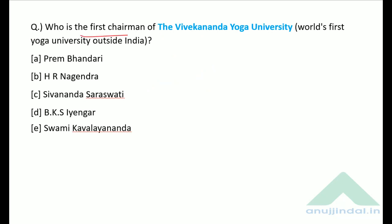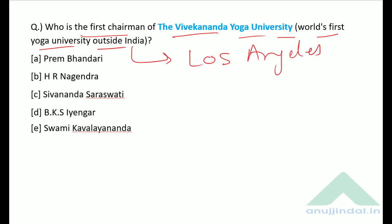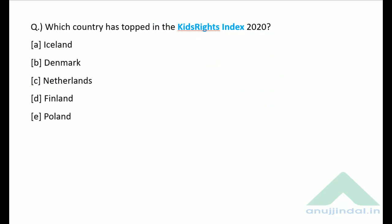Who is the first chairperson of the Vivekananda Yoga University — the world's first yoga university outside India established in Los Angeles, USA? The first chairperson of this university is Dr. H.R. Nagendra.